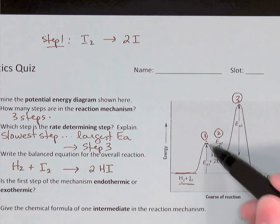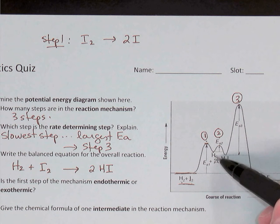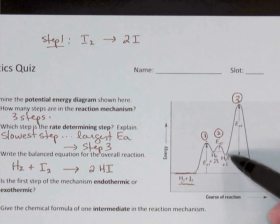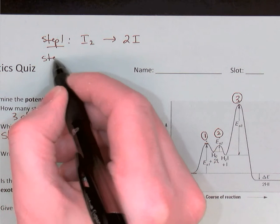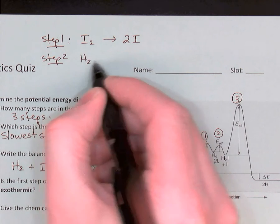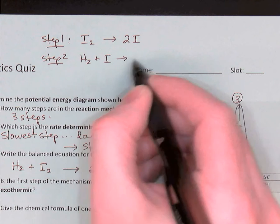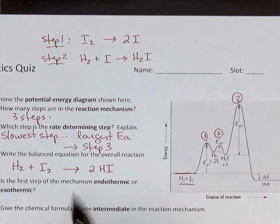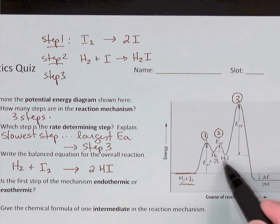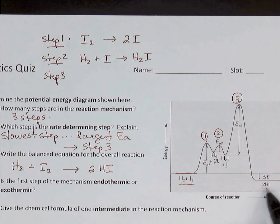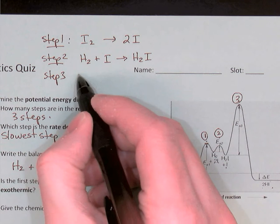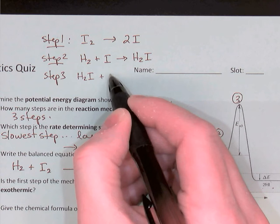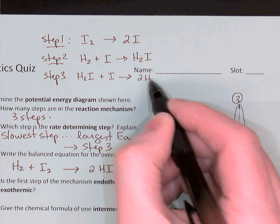In the second step, it begins with H₂ and two I's and finishes with H₂I and an I. Canceling the one I that appears on both sides, step two is: H₂ reacts with an I and becomes H₂I. The third step says H₂I plus an I becomes two HIs, so H₂I reacts with an I and becomes two hydrogen iodides, HI.